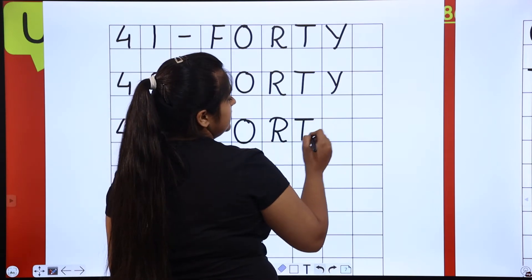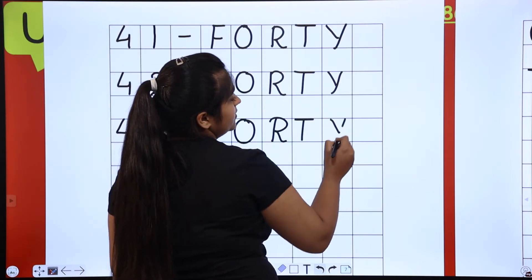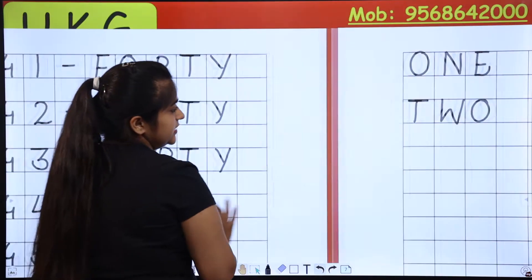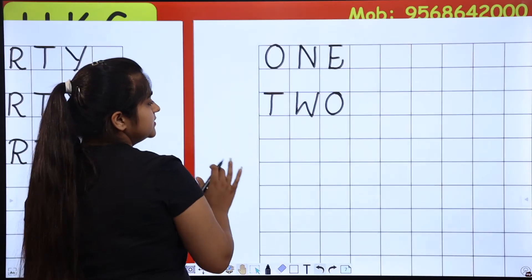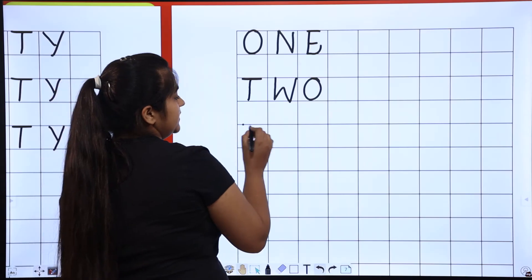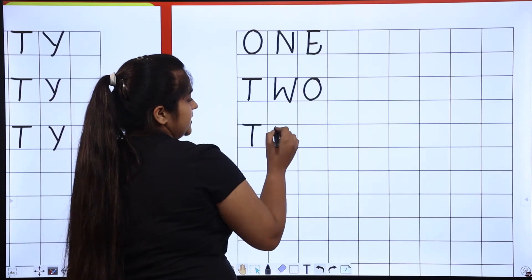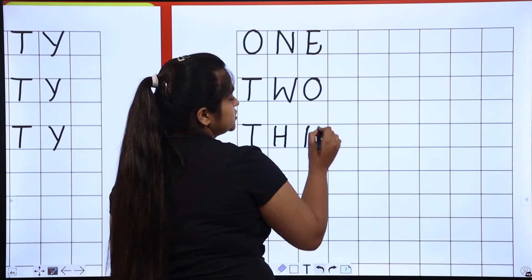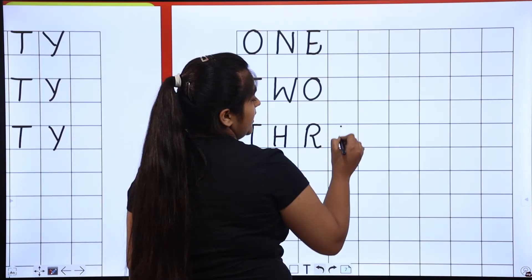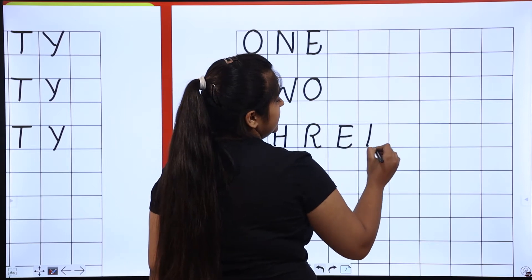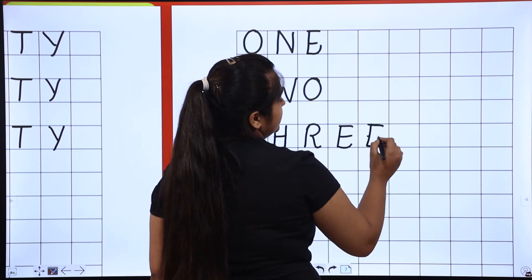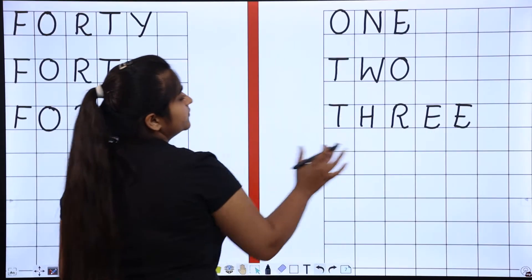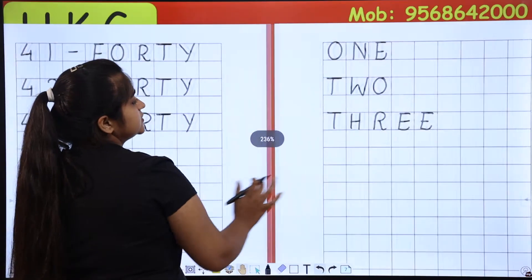Okay, 43. 43 is T-H-R-E-E. So 43 is FORTY-THREE.